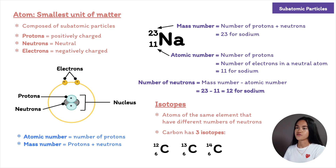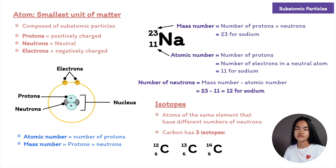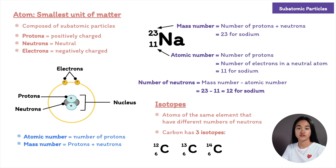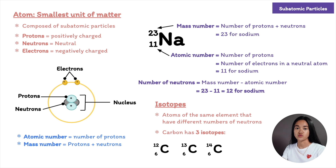Carbon-12 and carbon-13 are stable isotopes, meaning their nuclei don't have the tendency to lose subatomic particles — this process is called decay. Carbon-14, however, is unstable or radioactive. Its nuclei decay spontaneously, giving off energy and particles. When decay occurs and changes the number of protons, the atom becomes a different element. When a carbon-14 atom decays, a neutron decays into a proton, and so carbon-14 becomes a nitrogen atom.